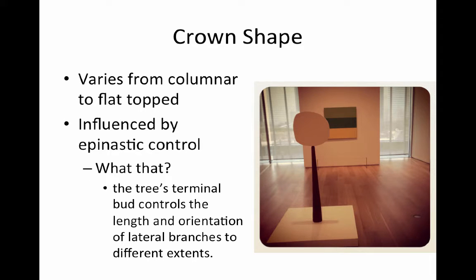Crown shape can tell us a lot about a tree's situation. Crown shape can vary from columnar to flat-topped — it's very variable, and that's based on both the physical growth situation and interactions between plants, whether physical or involving other plants.